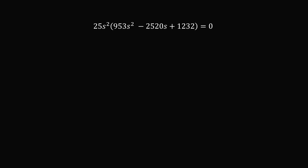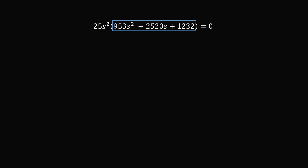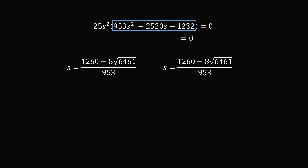We have the product of two terms equal to zero, so at least one must be zero. If 25S squared equals zero, then S equals zero, which would mean the car doesn't move — so we eliminate that possibility. The remaining quadratic equation gives two solutions via the quadratic formula: S equals (1260 minus 8√6461) over 953, or S equals (1260 plus 8√6461) over 953, with approximate values of S ≈ 0.64738 and S ≈ 1.9969 miles per minute.